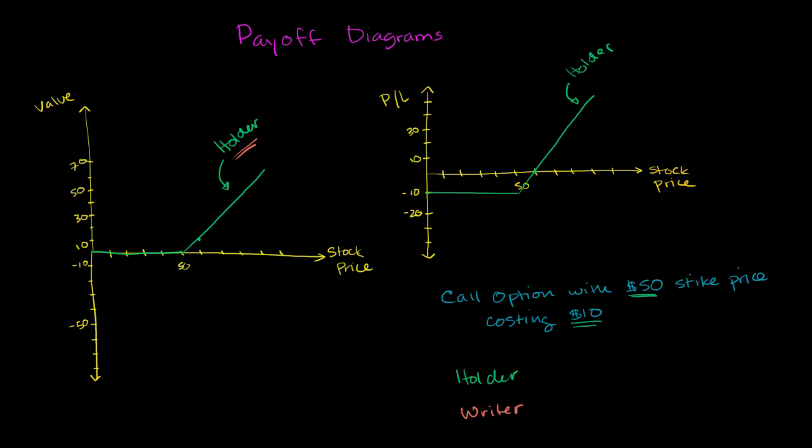So if the option never gets exercised, then the writer doesn't have to lose any money. But if the option does get exercised, then all of a sudden the writer starts to lose money. Because if the writer doesn't own the stock, and let's say the stock is at $60, the holder can exercise his option to buy at $50. The writer would then have to go buy the stock on the market for $60 and sell it for $50. So they would lose $10.